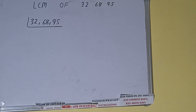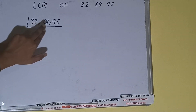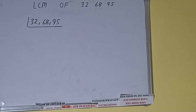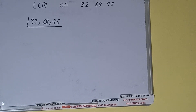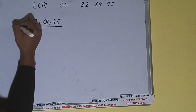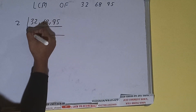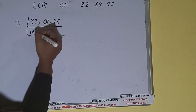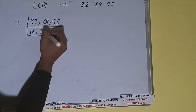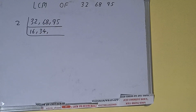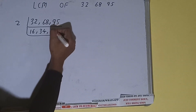We check if any of the numbers are divisible or not. The first and the second number are divisible, but the third number is not divisible by 2. So we'll only divide the first and the second number, and the third number we'll just copy down. So 32 will become 16, 68 will become 34, and 95 is not divisible by 2 so we just copy it down.